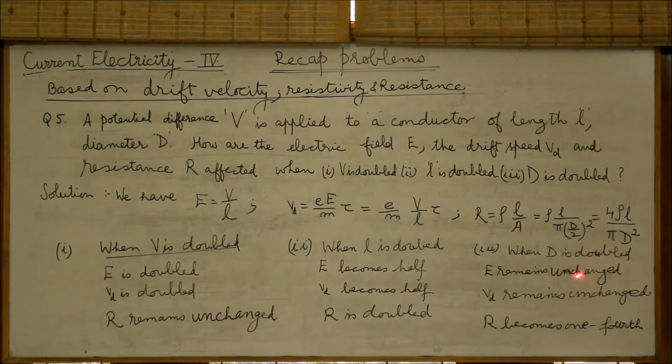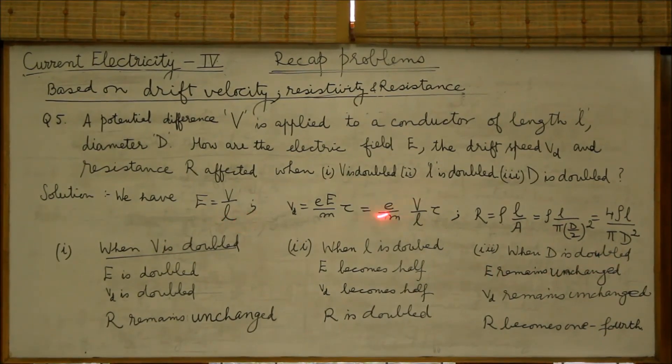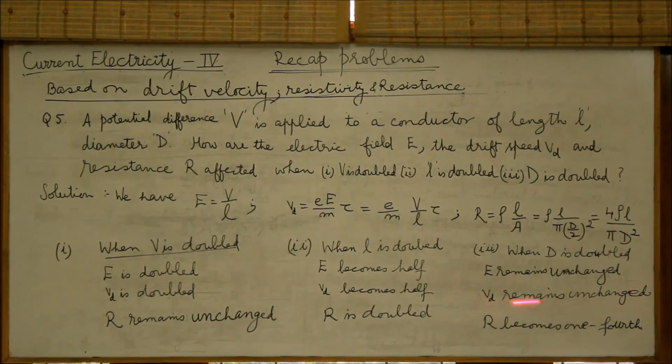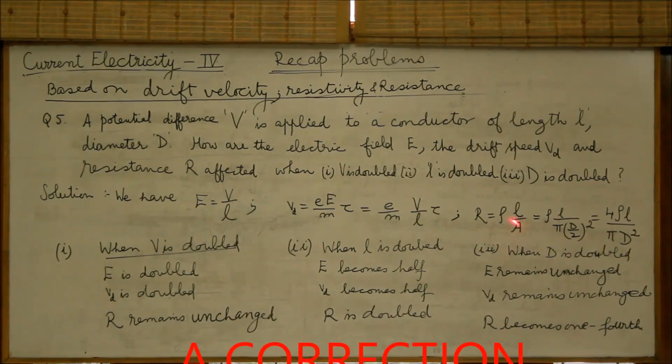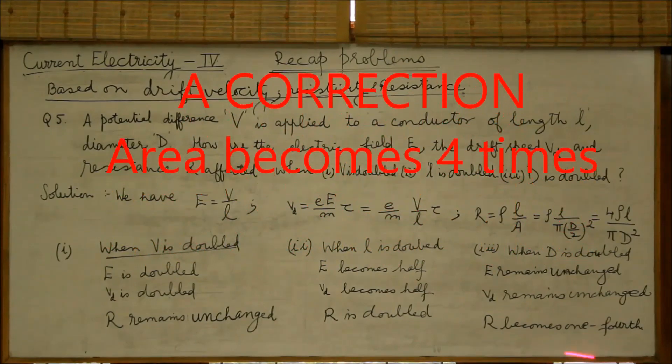On doubling the diameter, the electric field intensity remains unchanged. The drift speed also remains unchanged. Whereas R becomes one-fourth. Double diameter means area is quadrupled. Therefore the resistance becomes one-fourth.